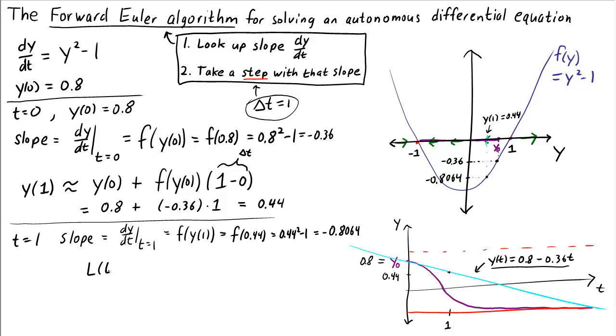This means our new linear approximation calculated around t equals 1 is y(1) plus the slope f(y(1)) times (t minus 1), or 0.44 minus 0.8064 times (t minus 1). This is an equation for a line with slope negative 0.8064. It might look something like this. We move along this line with slope negative 0.8064 for another time step of width 1. In other words, we move until time 2.